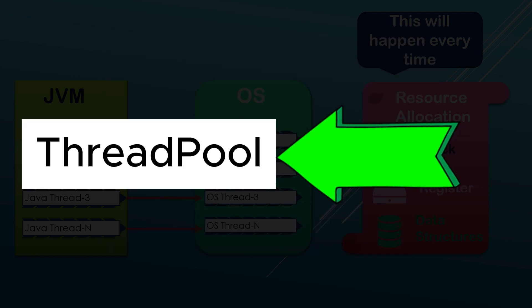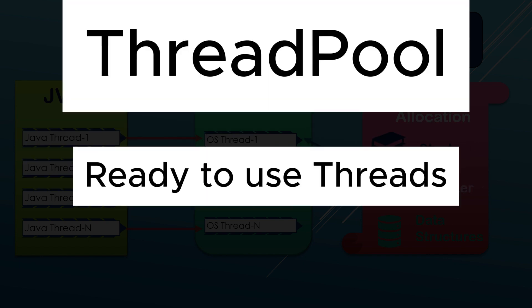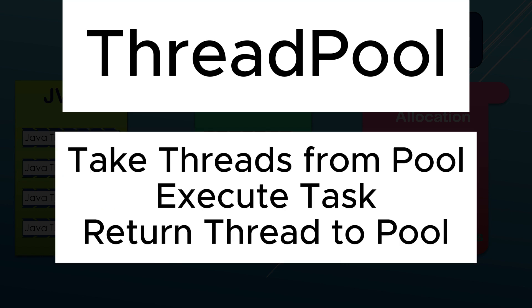Think for a moment — why can't we have a fixed number of ready threads available in a group or pool, which are in a runnable state? During execution, the required number of threads will be borrowed from that pool. Once the task execution is completed, those threads will be returned back to the pool for other tasks to use whenever required. That exactly is the concept of a thread pool.